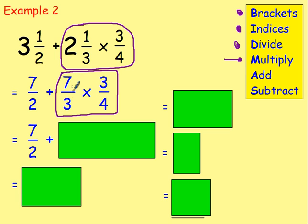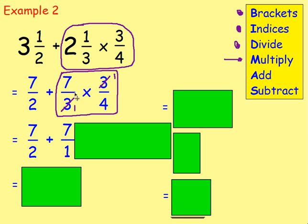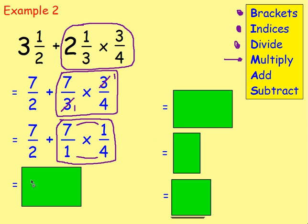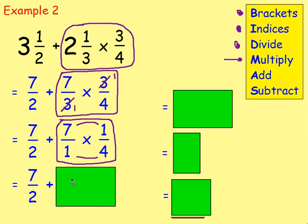We still want to work out the multiply part first. Seven halves plus — we leave that. We carry out seven thirds multiplied by three quarters. See if you can simplify: seven thirds and three quarters don't simplify on their own, but diagonally the two threes can both be divided by three — giving one and one. So we have seven over one times one over four. Seven times one is seven, one times four is four. We get seven over two plus seven over four.